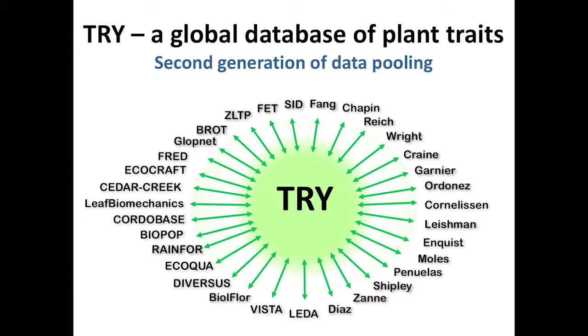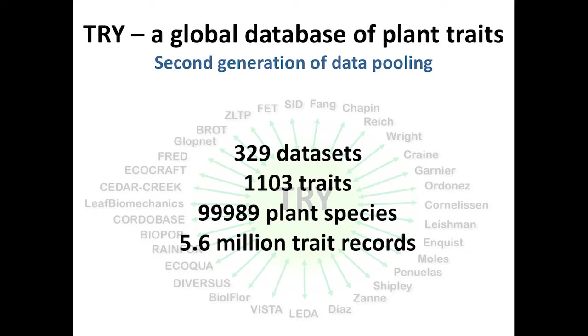Today it's about 329 datasets in TRY, 1,000 traits, about 100,000 species, and 5.6 million trait records. This is the database that is currently available. We are currently working on the next version of the database and it will have more data.